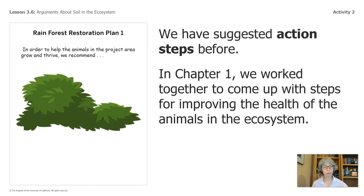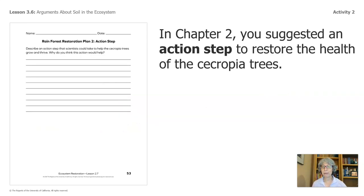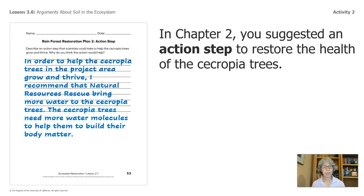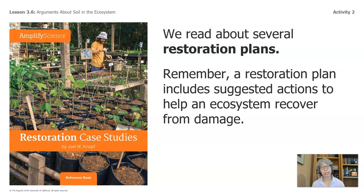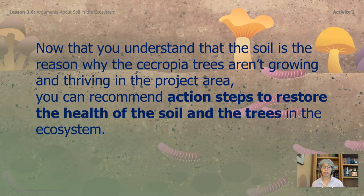We decided that we would add more plants to the ecosystem. In Chapter 2, you suggested an action step to restore the health of the cecropia trees — you most likely suggested that the cecropia trees needed more water and that water molecules help them build their body matter. Now for Chapter 3's action step, we need to consider that we've read several restoration plans. The restoration plans include suggested actions to help an ecosystem recover from damage. Now that you understand that the soil is the reason why the cecropia trees aren't growing and thriving, you can recommend action steps to restore the health of the soil and the trees.